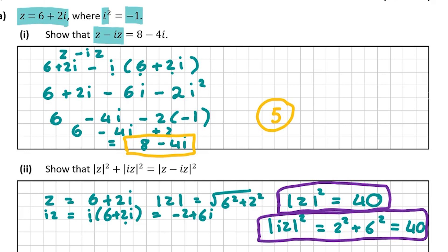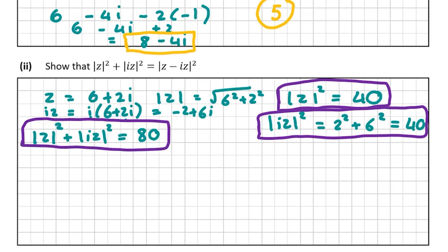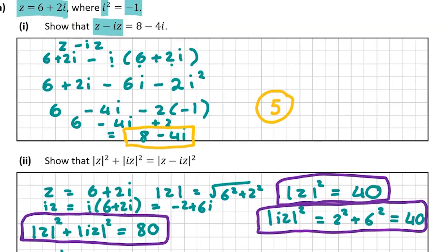From what we've done so far, we can conclude that the modulus of z squared plus the modulus of iz squared equals 40 plus 40, which is 80. Now let's look at the right-hand side. We need to find z minus iz and then find the modulus of that squared. Scrolling up, we already know z minus iz equals 8 minus 4i.